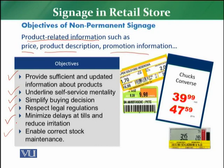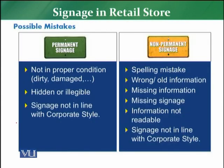Now, moving on to the discussion of possible mistakes in signage. If we talk about permanent signage, the first possible mistake is that the signage is not in proper condition — it is either damaged or dirty. So signage has to be in proper condition. Another possible mistake is that signage is hidden or is an illegal form of signage.